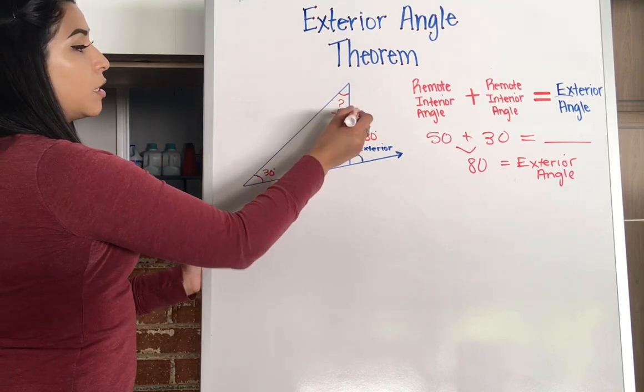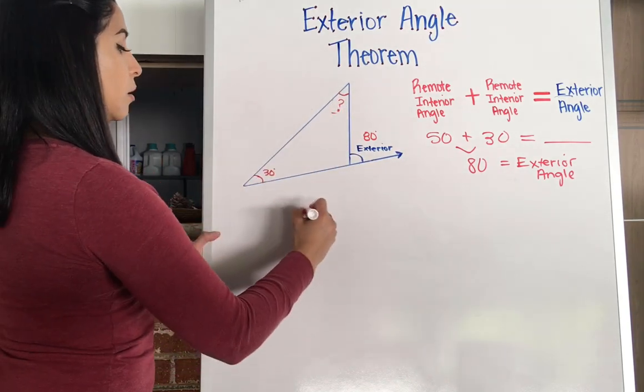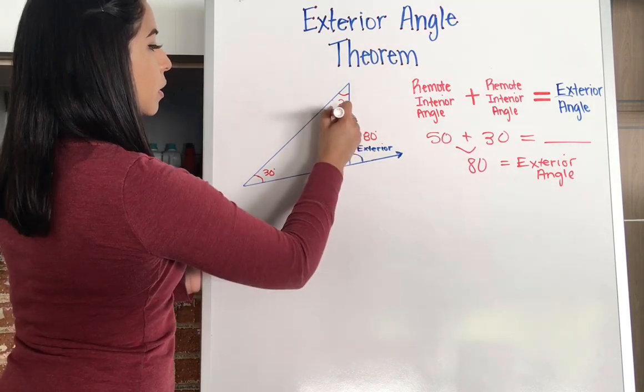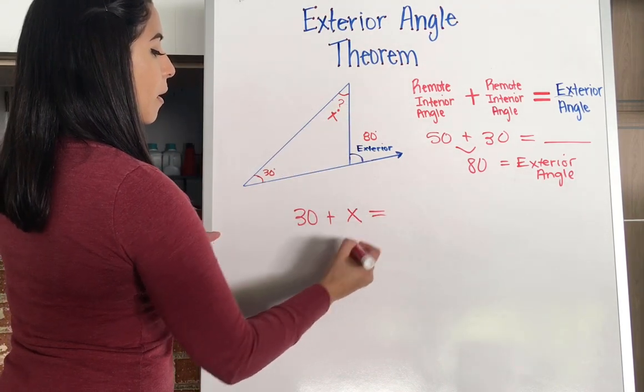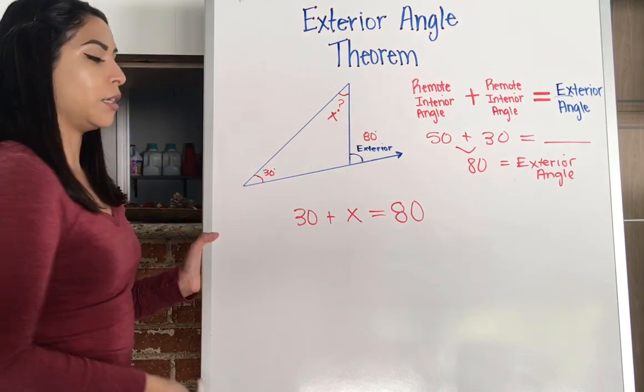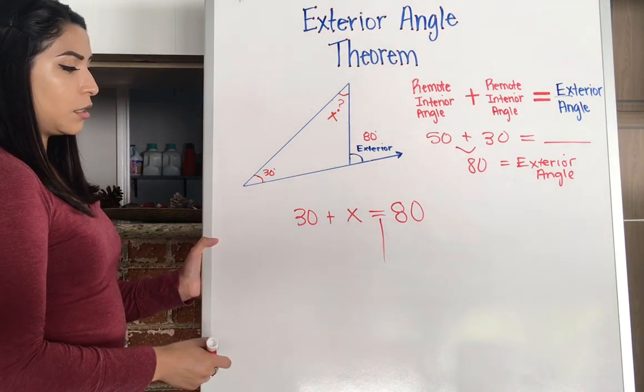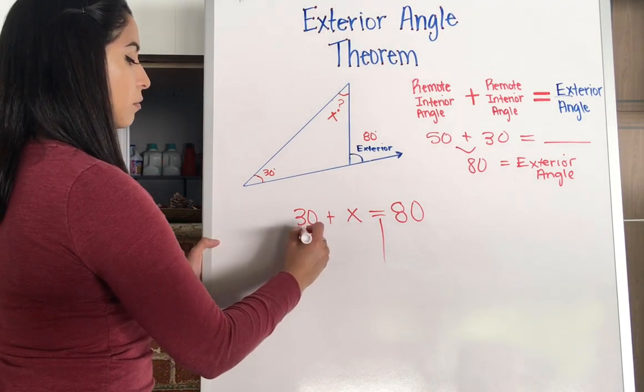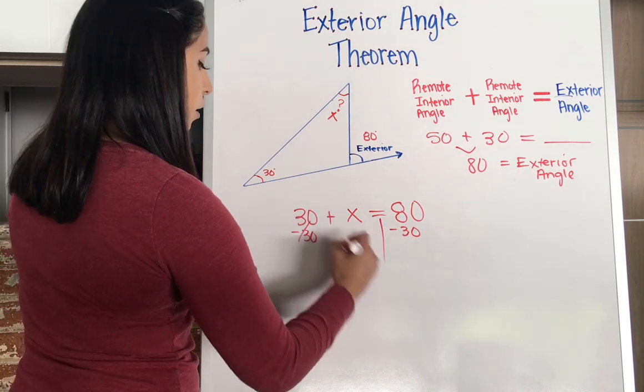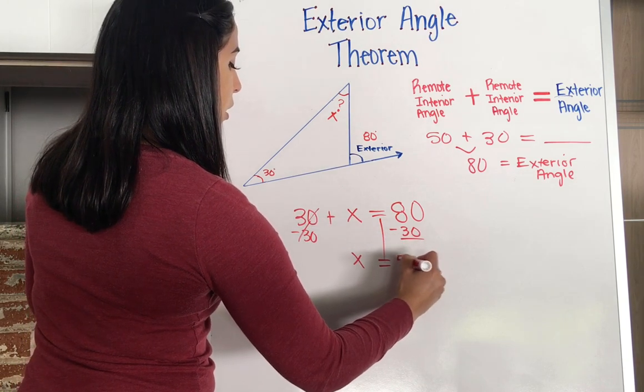So if I wanted to find out what that was, I'm going to do the exact same thing. I'm still going to add these up. So 30 plus, but now I don't really know what this is. Let's say it's X. But I know that it's going to add up to 80 degrees because 80 degrees is my exterior angle. And then I could solve this. So easy. Easy enough to solve. 30 plus something equals 80. So I'm going to subtract 30 from both sides. And get X equals 80 minus 30 is 50.